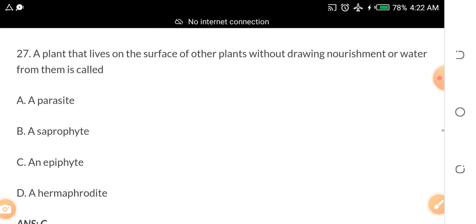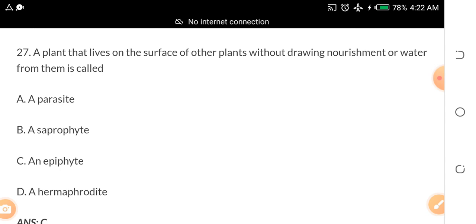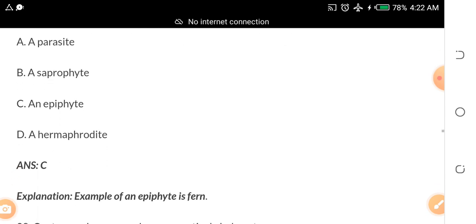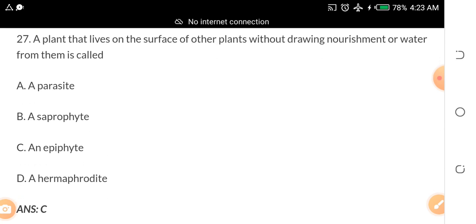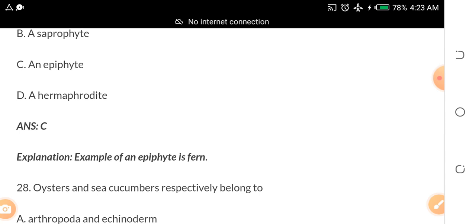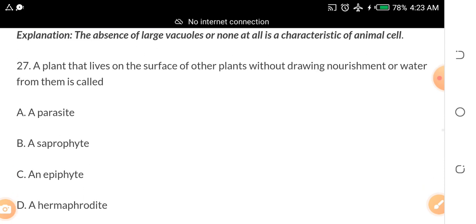A plant that lives on the surface of other plants without drawing nourishment or water from them is called A. parasite B. saprophyte C. epiphyte D. hermaphrodite. The answer is C. Example of an epiphyte is fern. It will live on another plant but it will not be taking water from that plant, it will not be taking nutrients. It is not parasitism because it's not taken from its host.